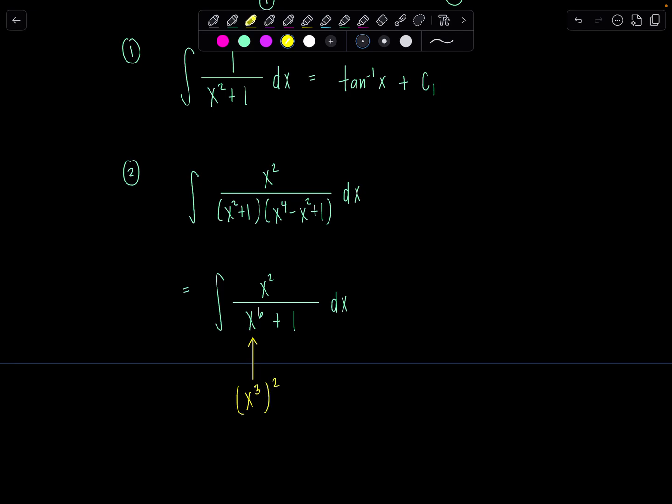Now I want you to think of x to the sixth as x cubed squared. Why do we want to do that? Because then if we let u equal x cubed, du is going to be 3x squared dx, which we basically have up here, right? x squared dx. So one third du is x squared dx.